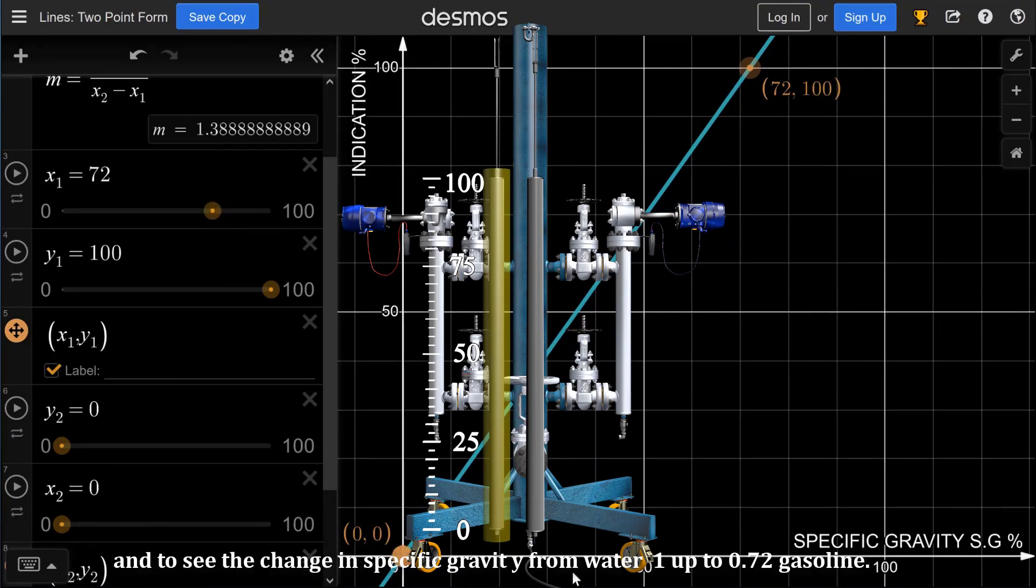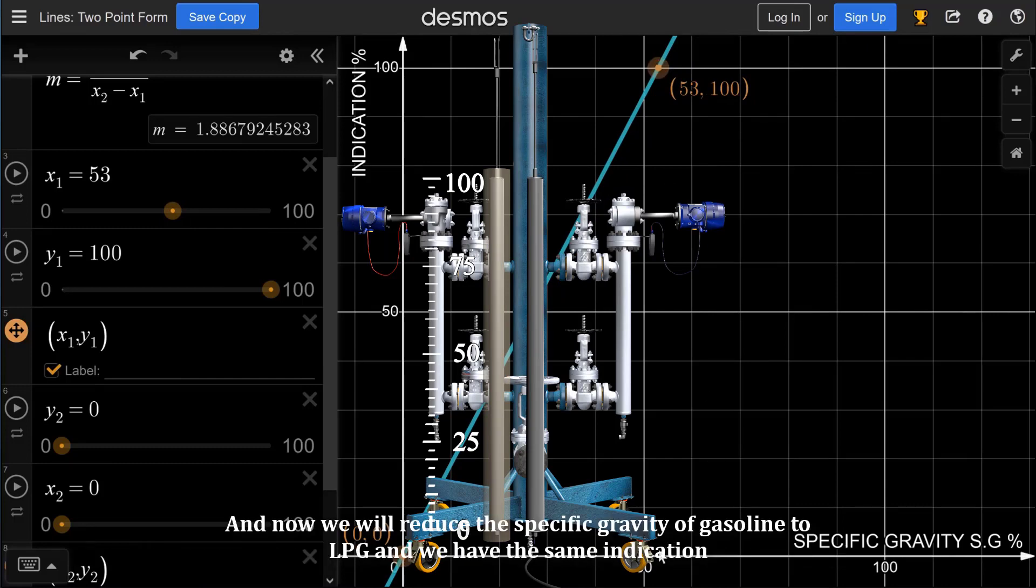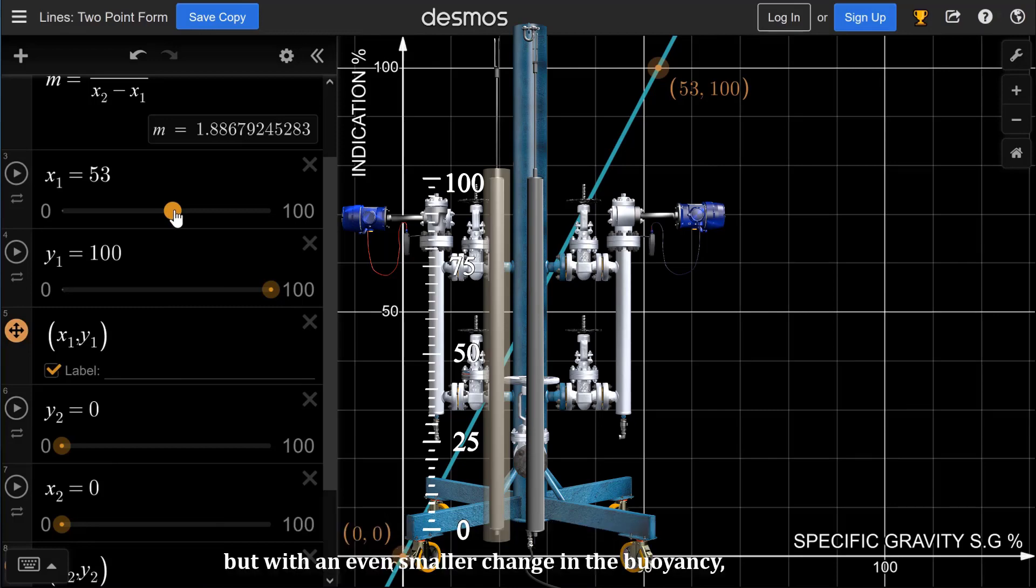To see the change in specific gravity from water 1 up to 0.72 gasoline, we see that we get the same indication 100%, but with a lower change in buoyancy. And now, we will reduce the specific gravity of gasoline to LPG, and we have the same indication but with an even smaller change in buoyancy.